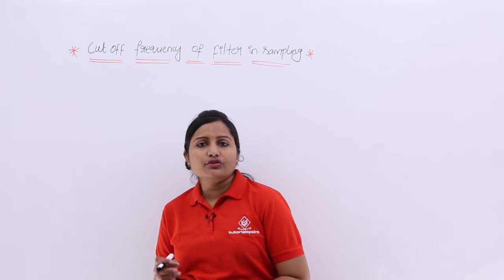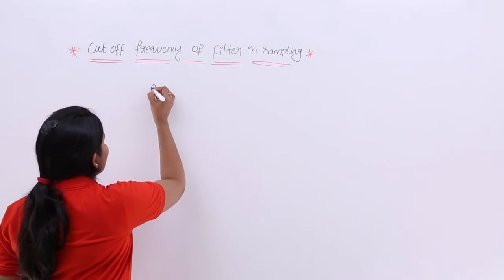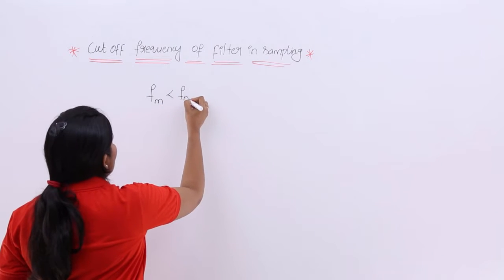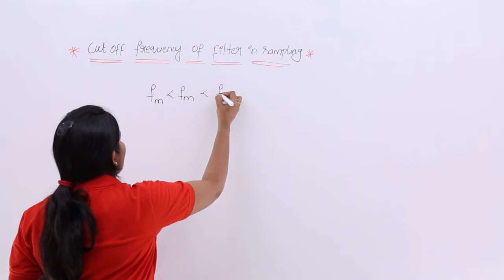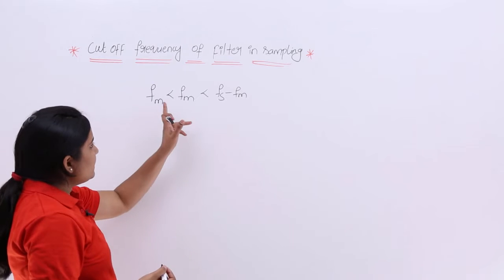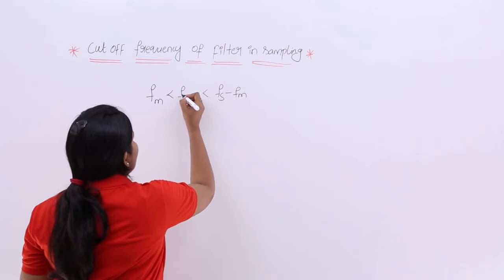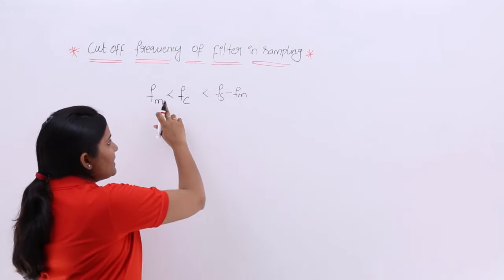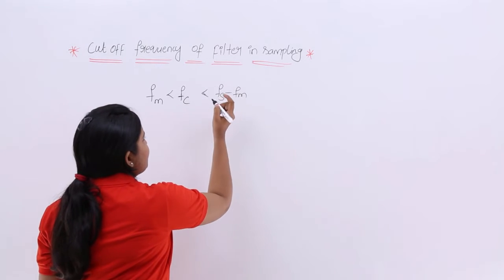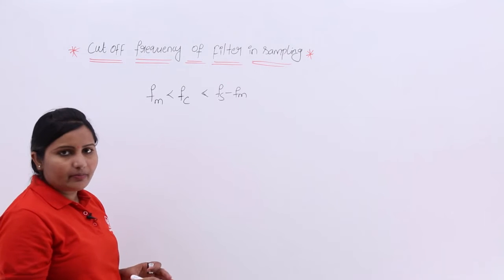There is a condition for the cutoff frequency of the filter in sampling. The cutoff frequency FC of the filter must be greater than FM, but it must be less than FS minus FM. That means your cutoff frequency must be greater than your message frequency but less than the difference of FS and FM.